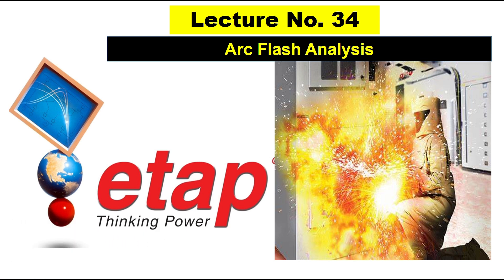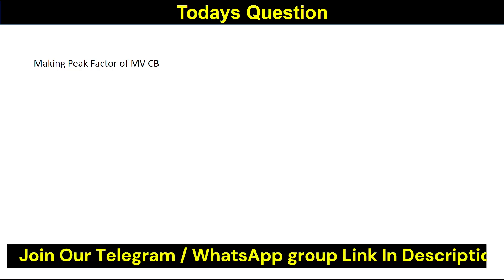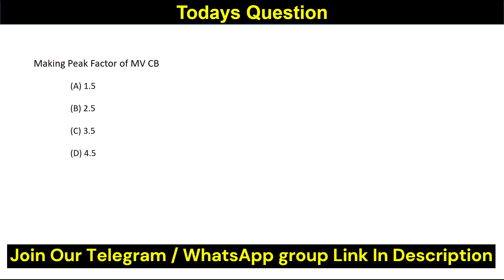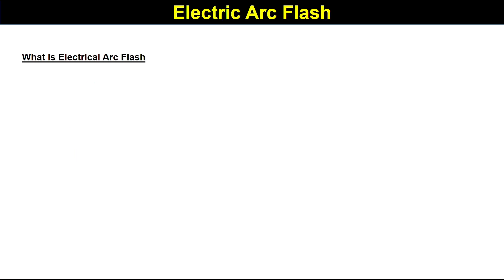Before moving further, we have a small question: what is the making peak factor of an MV circuit breaker? You have four options: 1.5, 2.5, 3.5, and 4.5. Comment your answer in the comment section and I will share the right answer so that everyone knows.